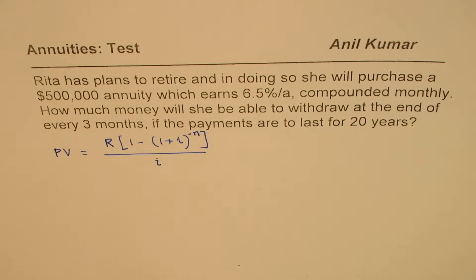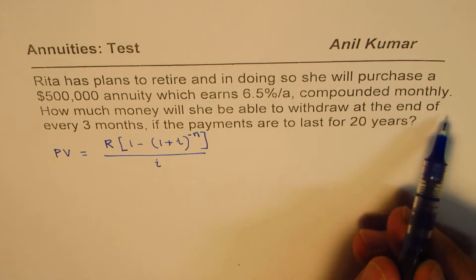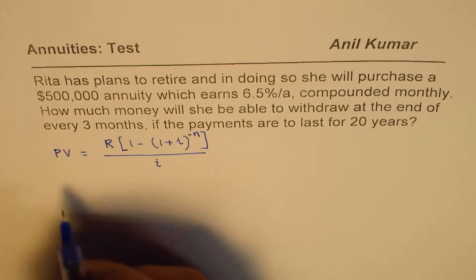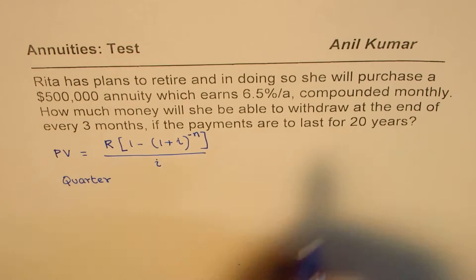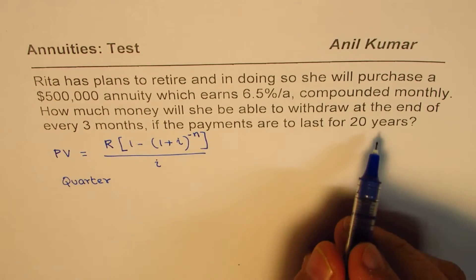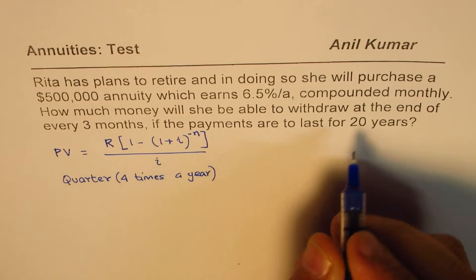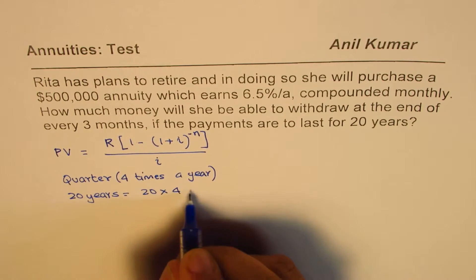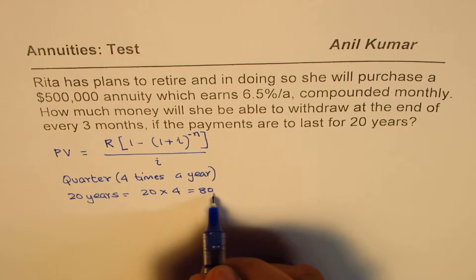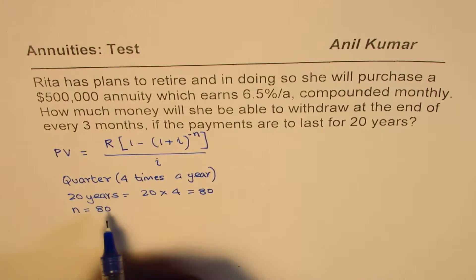So the first step is to understand whether it is a future or a present annuity case. Now, how much money will she be able to withdraw at the end of every three months? So it is quarterly — 4 times a year. When we say 20 years, that translates to 20 times 4, which is 80. So n equals 80.